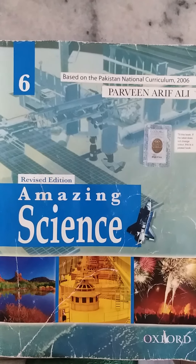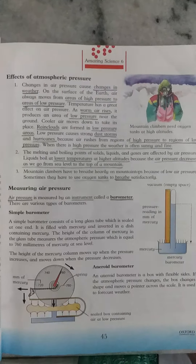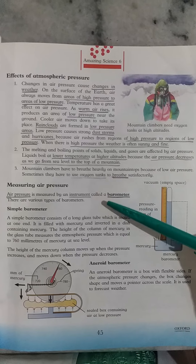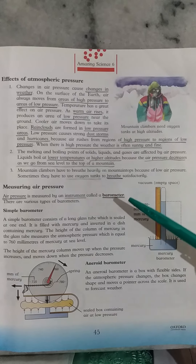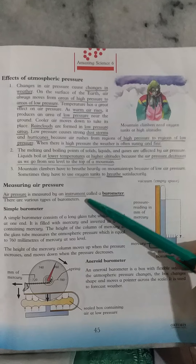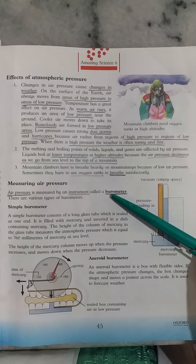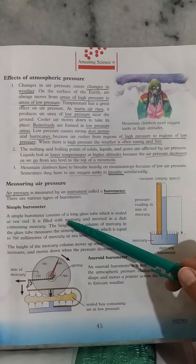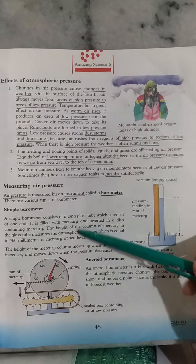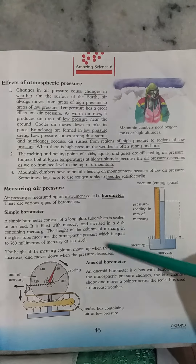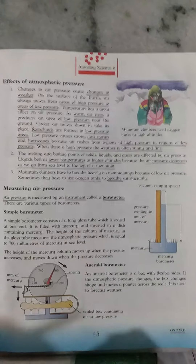Assalamualaikum class 6 students. In our previous class we read the topic of measuring air pressure. To measure air pressure, an instrument called a barometer is used. Barometers are present in different types: simple barometer and aneroid barometer. We discussed these two types of barometer in our previous class.